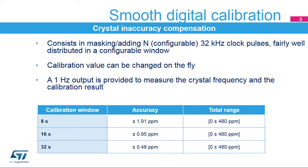The digital calibration is used to compensate crystal inaccuracy and accuracy variations with temperature and aging. It consists in masking or adding a programmable number of RTC clock cycles fairly well distributed in a configurable window. The calibration value can be changed on the fly depending on detected temperature changes, for instance. A 1 Hz calibration output signal is provided to measure the crystal frequency before and after applying the calibration value.